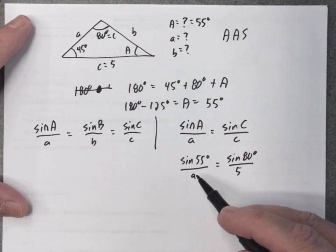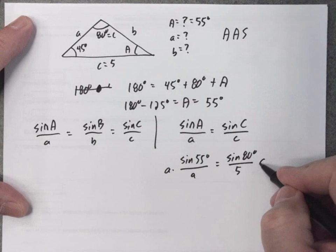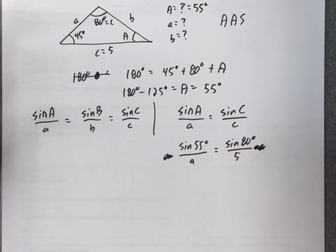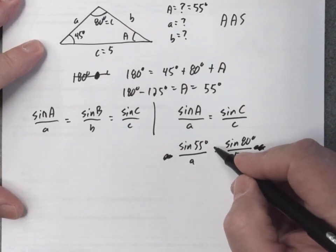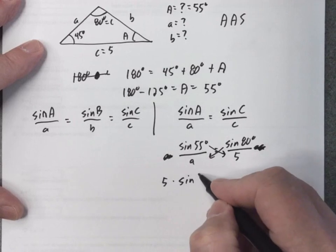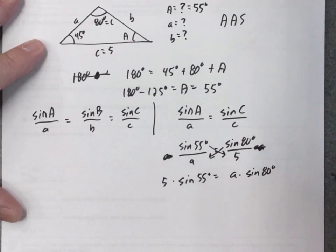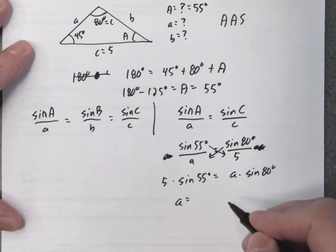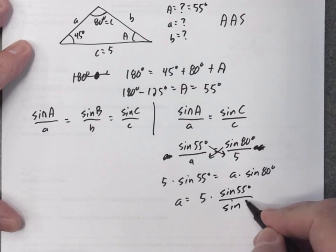So now here's an equation with only one variable so I can do some algebra and rearrange this. If you remember algebra, when you have two fractions equal, you can cross multiply. Five times the sine of 55 degrees equals A times the sine of 80 degrees. If I want to get A by itself, I can divide both sides by the sine of 80 degrees. End up with five times the sine of 55 degrees over the sine of 80 degrees.